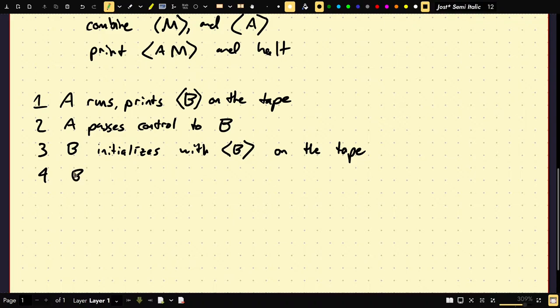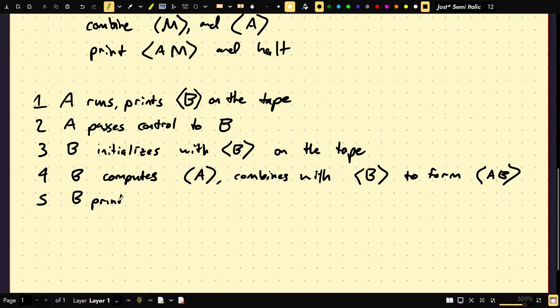Four. B computes the encoding of A, combines with what's left the encoding of B to form the machine A, B. And this combination, by the way, involves this process control handoff as well. This is not just two pasted together encodings of a Turing machine. This is one Turing machine which does A, then it does B. The process handoff happens. Five. B prints AB and halts. Okay, so that's the proof. This is then AB is a machine to print its own encoding. It is a TM to print its own encoding.